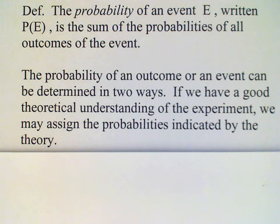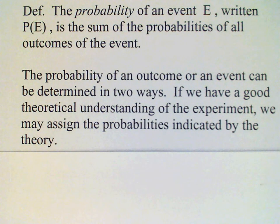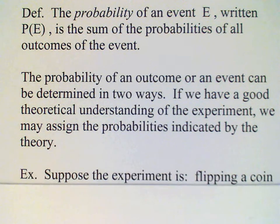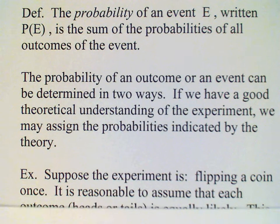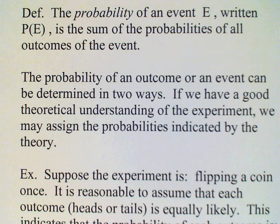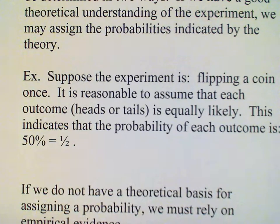So now we have to deal with actually finding a numerical value for the probability of an outcome. There are two different ways that this can be determined. If we have a good theoretical understanding of the experiment, then we can assign probabilities according to the theory. For example, suppose our experiment consists of